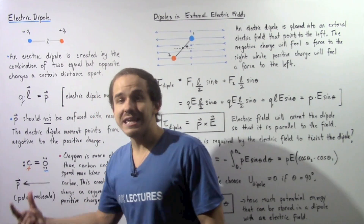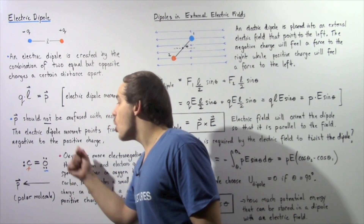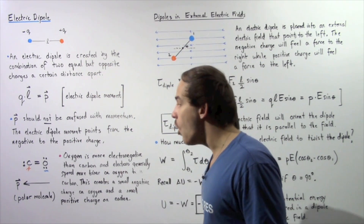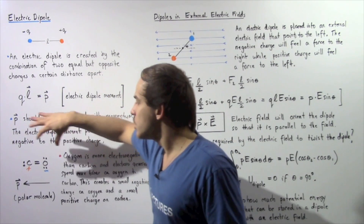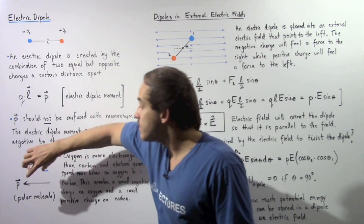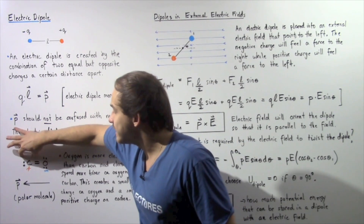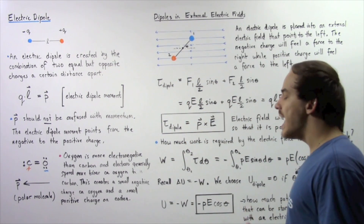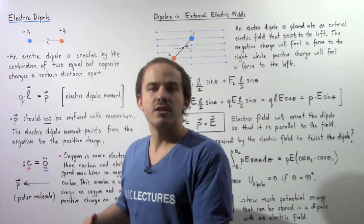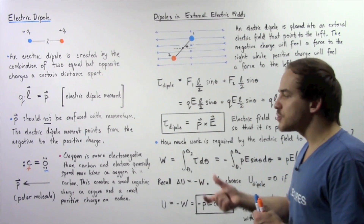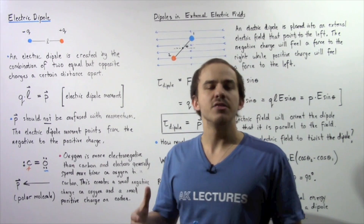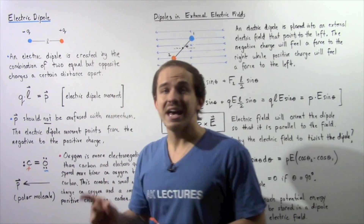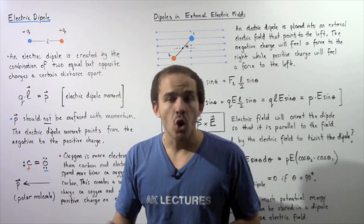Now we have a separation of equal but opposite charges. Even though the overall net charge is zero, there will be an electric dipole and also an electric dipole moment, which will point from the oxygen (negative) to the carbon (positive) — from negative to positive in the physics convention. A molecule that has an electric dipole is called a polar molecule.